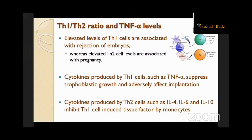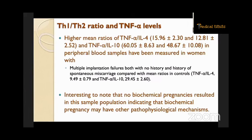When it comes to TH1 and TH2 ratio and TNF-alpha levels, elevated levels of TH1 cells are associated with rejection of embryos, whereas elevated TH2 cell levels are associated with pregnancy. Cytokines produced by TH1 cells such as TNF-alpha suppress trophoblastic growth and adversely affect implantation. Cytokines produced by TH2 cells such as IL-4, IL-6, and IL-10 inhibit TH1 cell-induced dysfunction so that pregnancy implantation rates will improve. Higher mean ratios of TNF-alpha to IL-4 in peripheral blood have been measured in women with multiple implantation failures compared with controls.